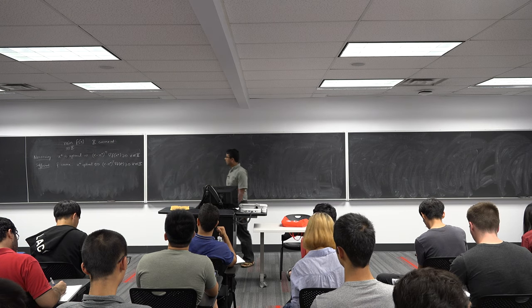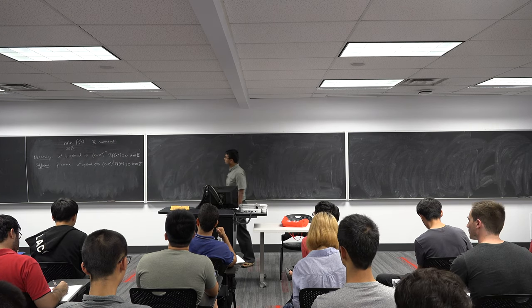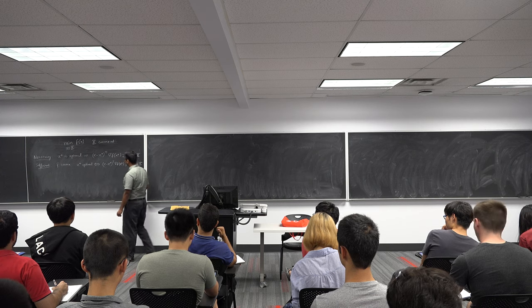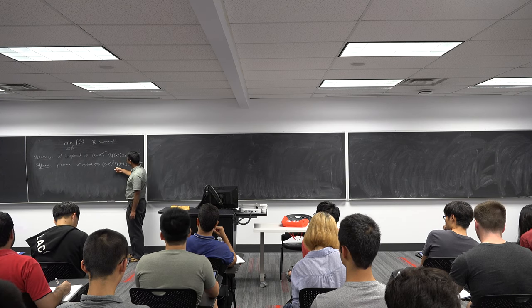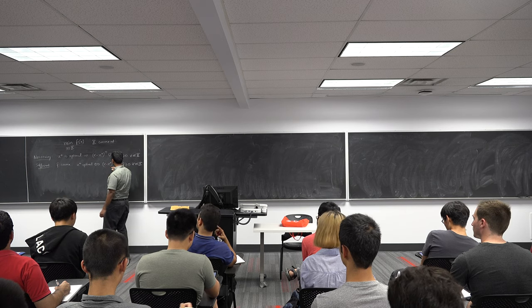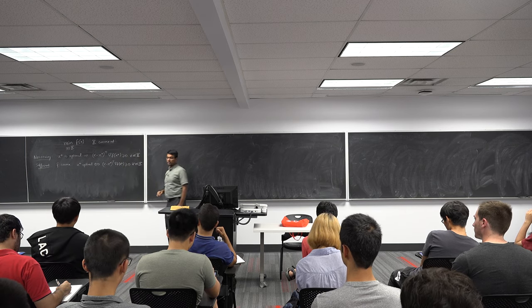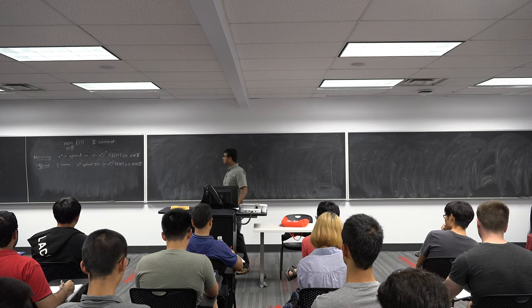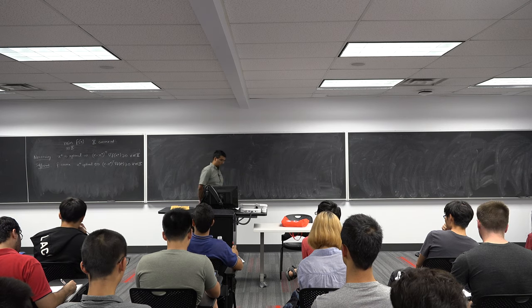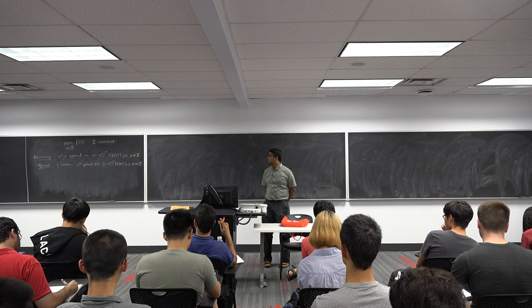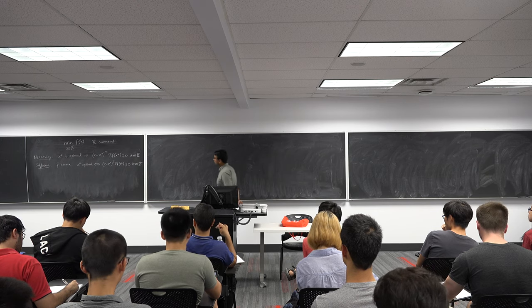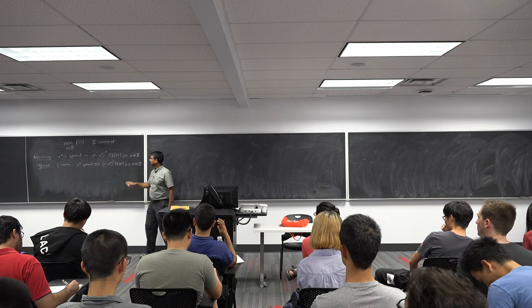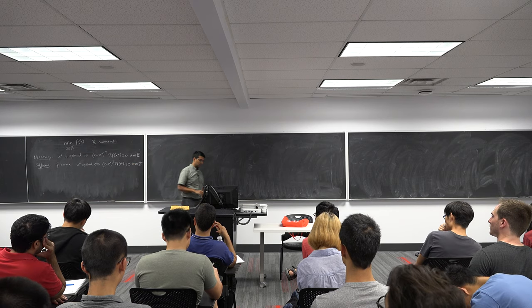The sufficient condition was: f convex, then x star is optimal if and only if (x minus x star) transpose times the gradient of f at x star is greater than or equal to 0 for all x in capital X. These were the two results we proved in the previous class, using the Taylor series formula and the definition of convex functions. Today's class, we want to think about a simple algorithm that converges to a point satisfying the first order necessary condition for optimality.